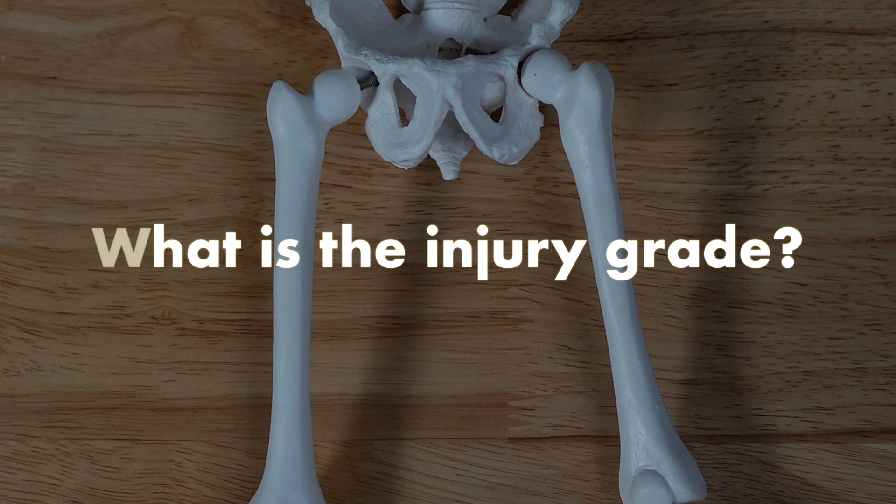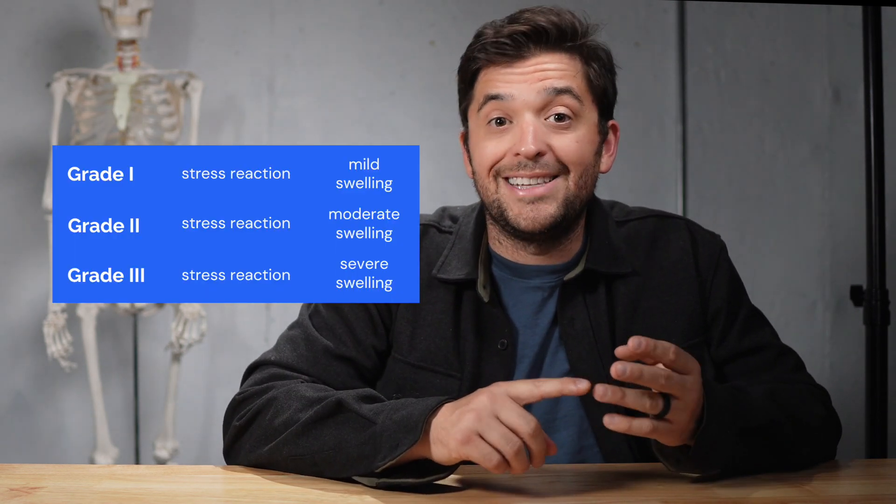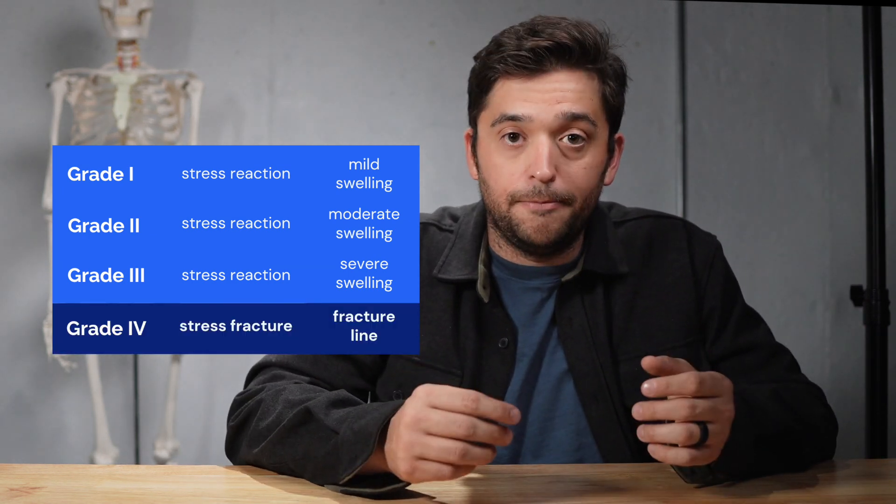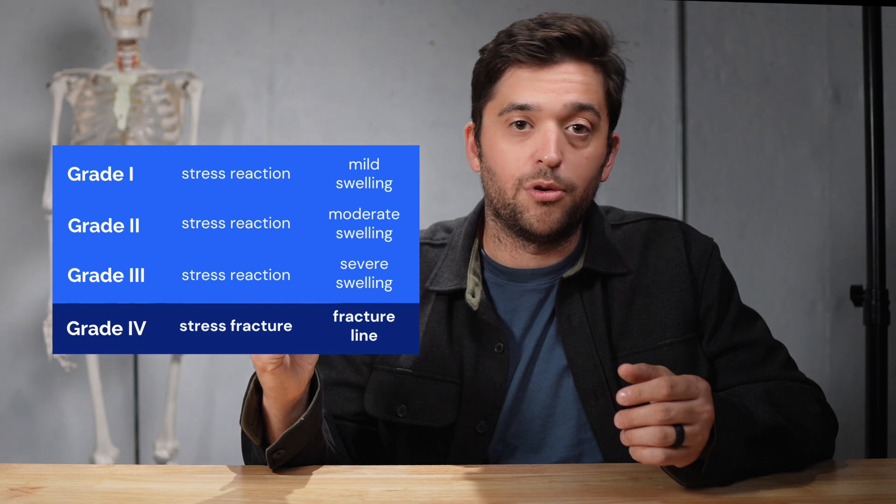Your third question is: what is the grade on imaging? Most bone stress injuries are diagnosed via MRI — it's our best test for determining what you're dealing with. When an MRI is performed, we grade bone stress injuries depending on the image we see. A grade one, two, or three injury is a stress reaction, meaning we only see swelling, while a grade four injury is when we start to see a fracture line. This is important because a lot of times people use the terms reaction and fracture interchangeably — that's not the best approach, as shown by this paper by Warden and colleagues. A runner with a grade one injury is going to be managed differently than a runner with a grade four injury. Know the bone, know the location, know the grade on imaging.